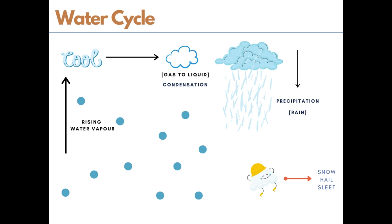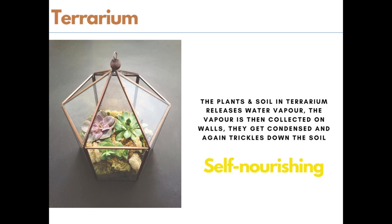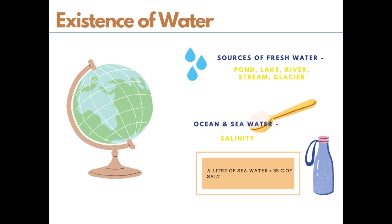This is a terrarium — it is enclosed with glass walls and has a layer of humus, that is soil, at the bottom. Small and large plants are arranged inside. The plants and soil in the terrarium release water vapor, which is collected on its walls, gets condensed, and trickles back down to the soil. Terrariums are self-nourishing as water cycles within them.